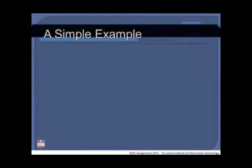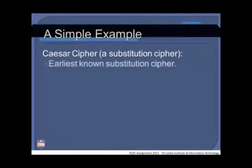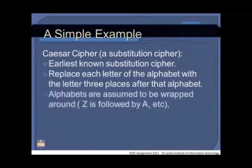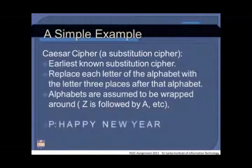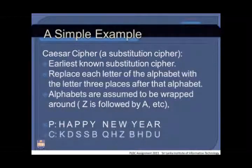An example of a substitution cipher is the Caesar cipher. Each letter of the alphabet is replaced by the letter three places after it in the alphabet. Alphabets are assumed to wrap around, meaning the letter Z is always followed by A. For example, converting 'HAPPY NEW YEAR' to Caesar cipher gives: K D S S B  Q H E Z  B H D U.